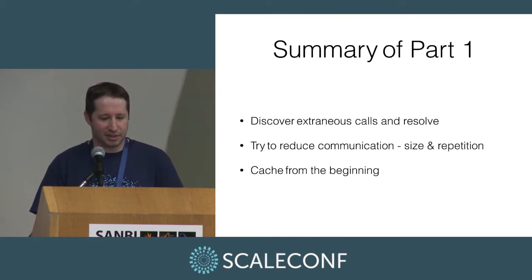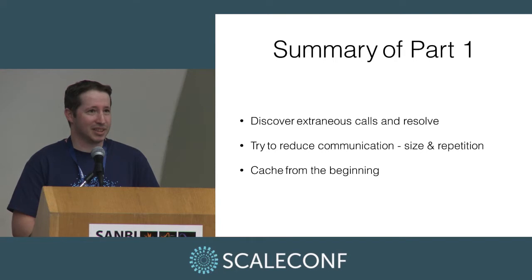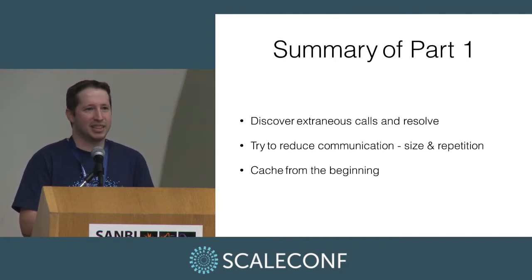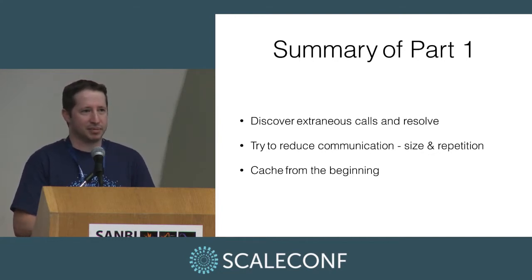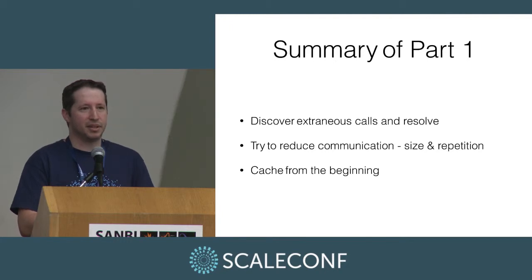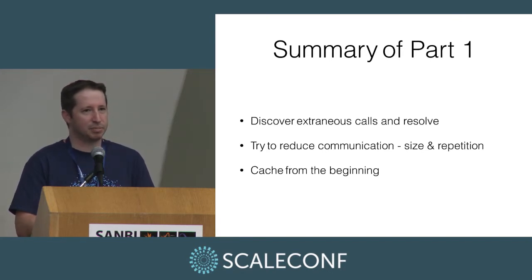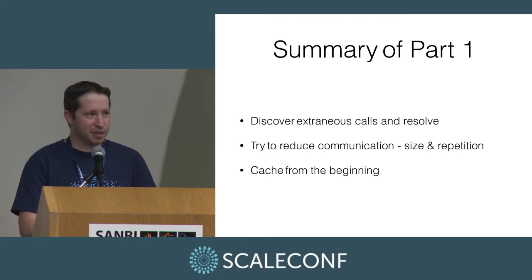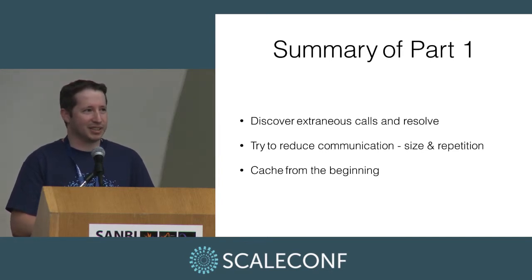In summary: try and discover extraneous network calls and resolve them. Reduce communication — there's no reason besides laziness that we are sending the entire JSON blob as an update back to the server; we could do a lot better by only sending back the changed bits. We're not too concerned about it because there are very few actual owners of apps compared to the number of people that view the apps. But if the dashboard was much more used, it would seriously affect performance. And cache from the beginning, because caching introduces side effects you'll never know until you start caching.